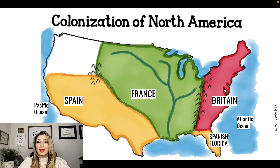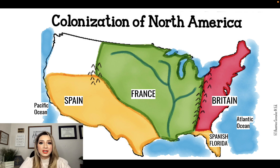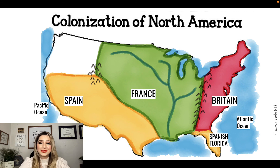This completes Module 1. Make sure that your map looks like this and that you've also labeled the oceans and added your compass rose to it as well. I hope you guys enjoyed that and we'll see you for Module 2. We'll see you soon!